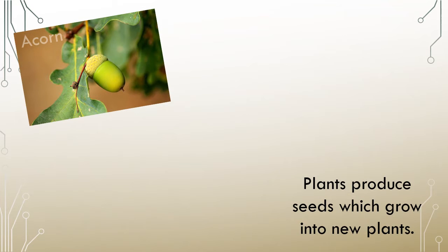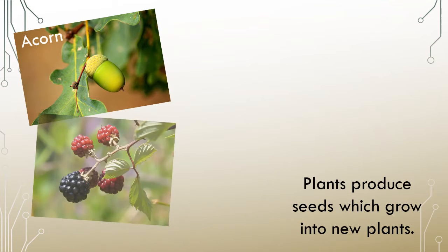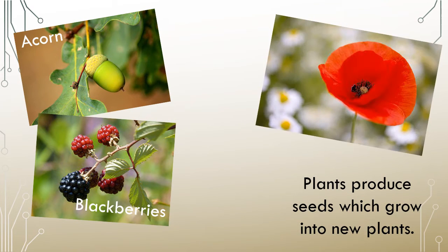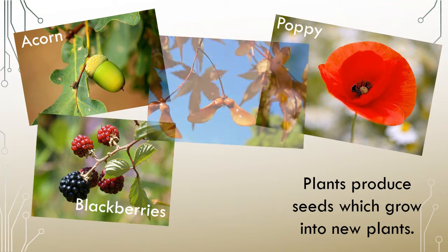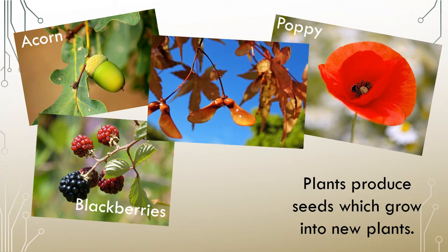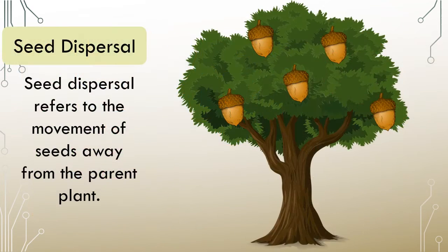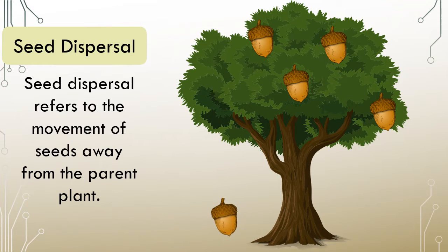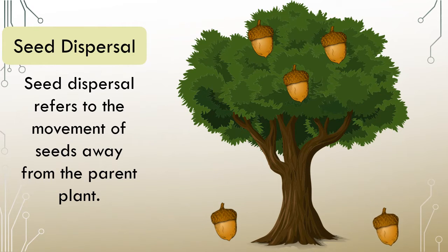Many plants produce seeds which grow into new plants. These can come in many different shapes and sizes. Seed dispersal refers to the movement of the seed away from the parent plant.